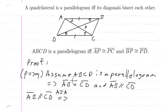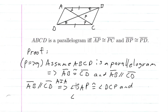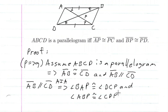Specifically, angle BAP is congruent to angle DCP, and angle ABP is congruent to angle CDP. So we have two pairs of congruent angles established from the parallel lines.